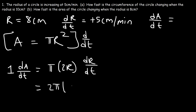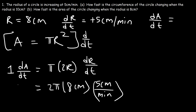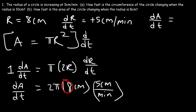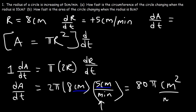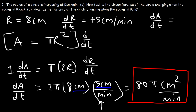We have 2π times the radius, which is currently 8 centimeters, times dr/dt, which is 5 centimeters per minute. So da/dt = 2 × 5 × 8 × π = 80π. For the units, centimeters times centimeters gives square centimeters, with minutes on the bottom. So da/dt is 80π square centimeters per minute. Area is always in square units, and dt always has some unit of time — seconds, minutes, hours, whatever applies.